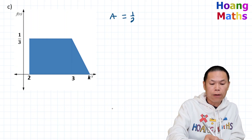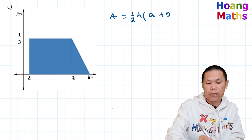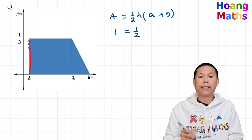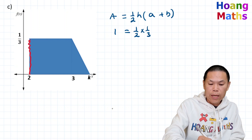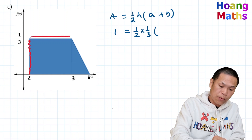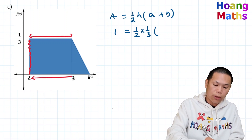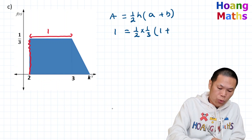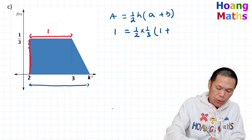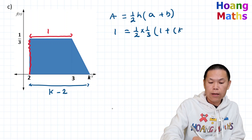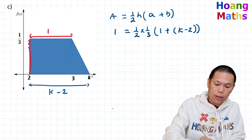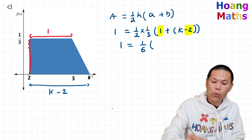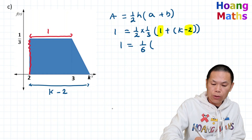The area of a trapezium is a half times height times bracket A plus B. So one equals a half times height — the perpendicular height is a third — times bracket A plus B. A is from two to three units, so A equals one. B is from two all the way to k, so B equals k minus two. Simplifying: one sixth times bracket one plus k minus two gives one sixth times k minus one.